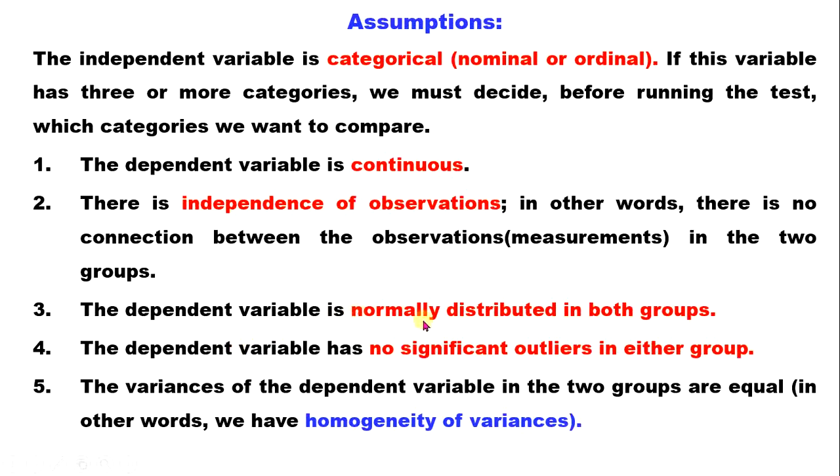The dependent variable is normally distributed in both groups. There should be no outliers in either group. The variance of the dependent variables in the two groups should be equal, that is, homogeneity of variance should be checked.